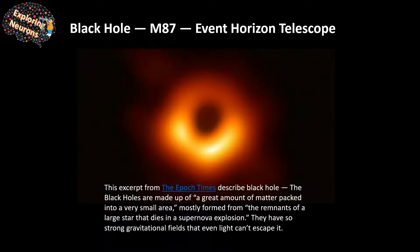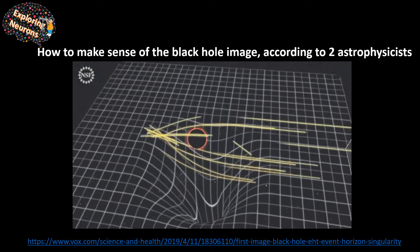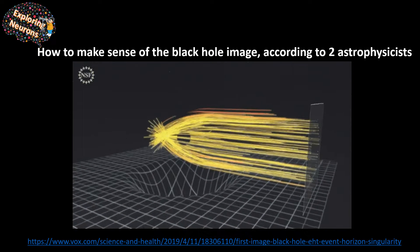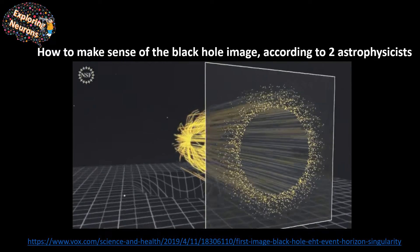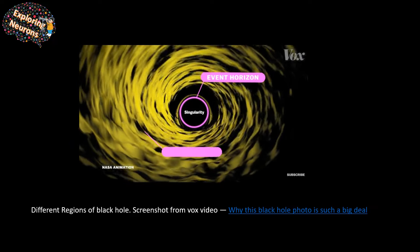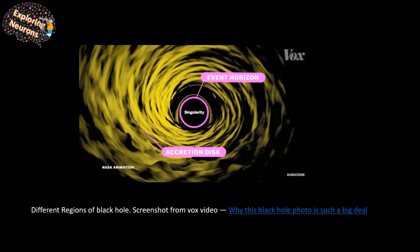This is the black hole image M87, taken by the Event Horizon Telescope team — it really looks beautiful. From the Epoch Times: black holes are made up of a great amount of matter packed into a very small area, mostly formed from the remnants of a large star that dies in a supernova explosion. They have a very strong gravitational field that even light can't escape. I'll provide links to animations showing the different parts of the black hole: the singularity, event horizon, and accretion disk.